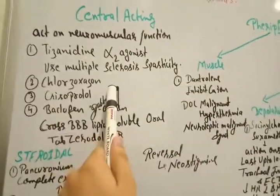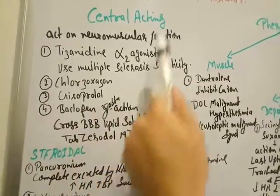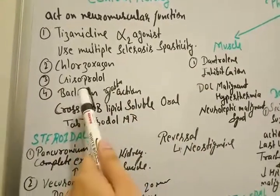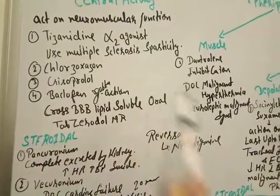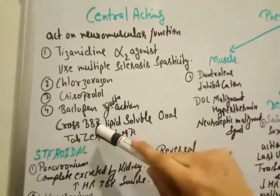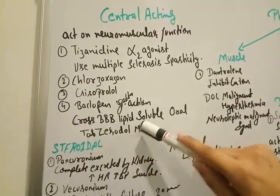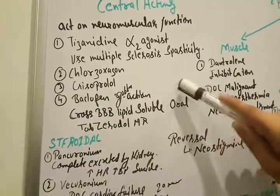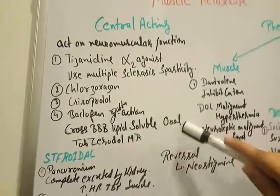Another one drug is chlorzoxazone, carisoprodol in centrally acting muscle relaxant and baclofen, it's a GABA action. What does it mean by centrally acting? Centrally acting means the drug which can cross the blood-brain barrier and it is lipid soluble. We can take this drug orally.